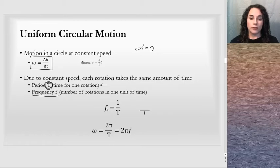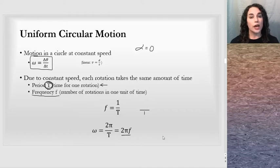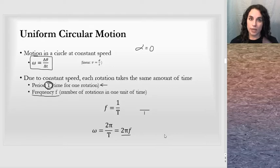If we note that frequency is 1 over the period, we can do a quick substitution and get omega equals 2πf. So we have this form for uniform circular motion that relates the period and frequency to the circular motion quantities.